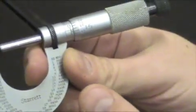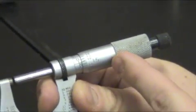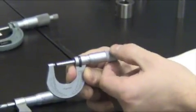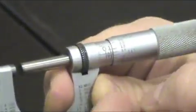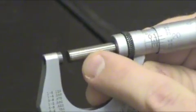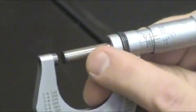First, the features. This here is the thimble. You're going to rotate this. By rotating this, it moves the spindle, which is used to take the measurements.